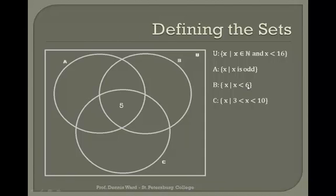Let's go ahead and put those numbers into groups. Five is going to be in all three groups — it's odd, it's less than six, and it's between three and ten. One and three are in A and B: they're odd numbers and less than six. Seven and nine are also odd and between three and ten, but they're not less than six, so they go in the region shared by A and C but not B.